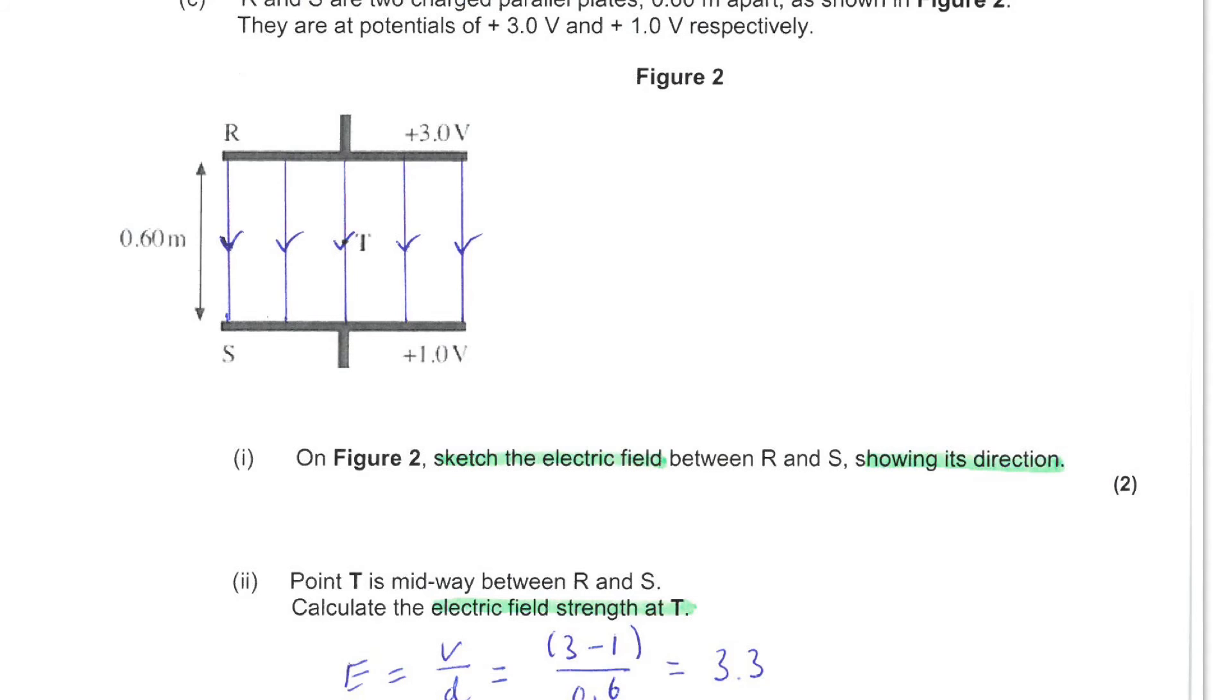You are asked to sketch the electric field between R and S showing its direction. So one of the key points is that this is a uniform field. So the field lines should be equally spaced throughout the field. And secondly, the direction should be from the more positive towards the less positive plate.